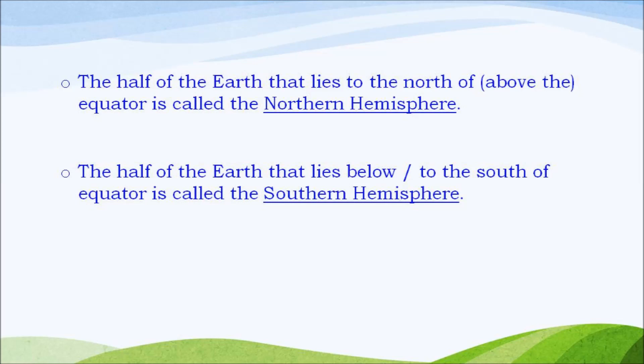The half of the earth that lies to the north of equator is called the northern hemisphere and the half of the earth that lies to the south of the equator is called the southern hemisphere.